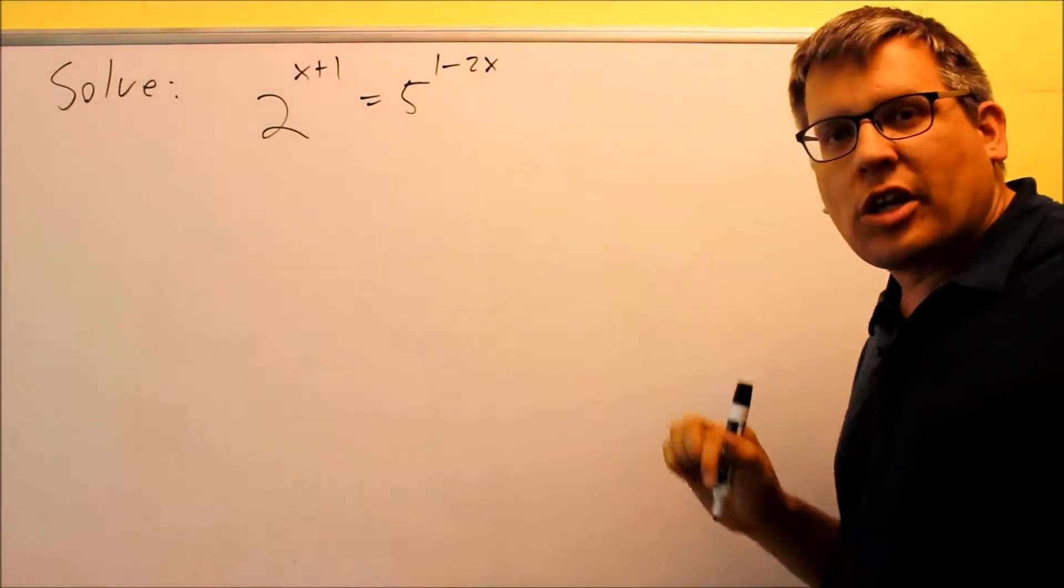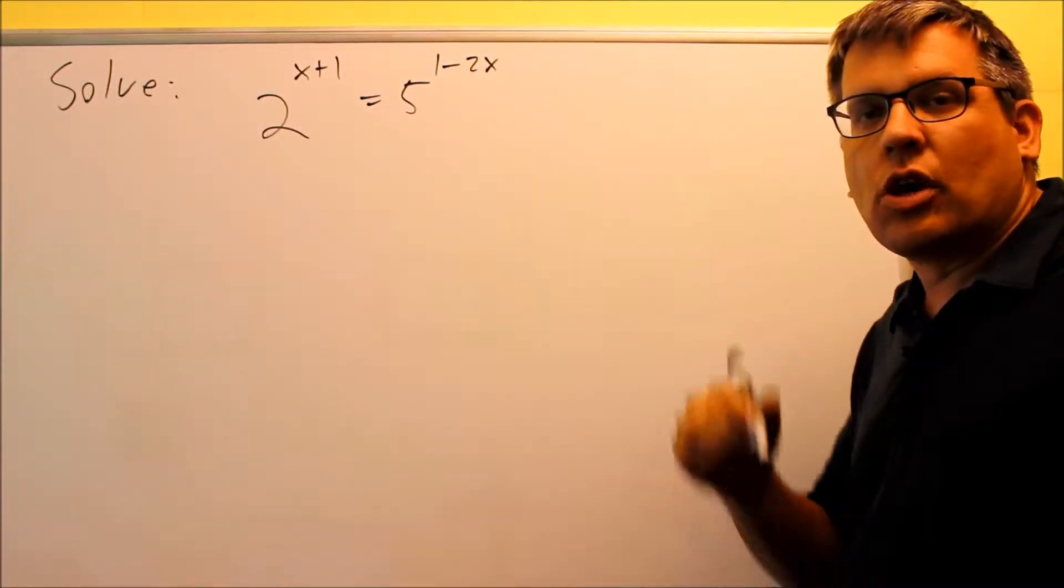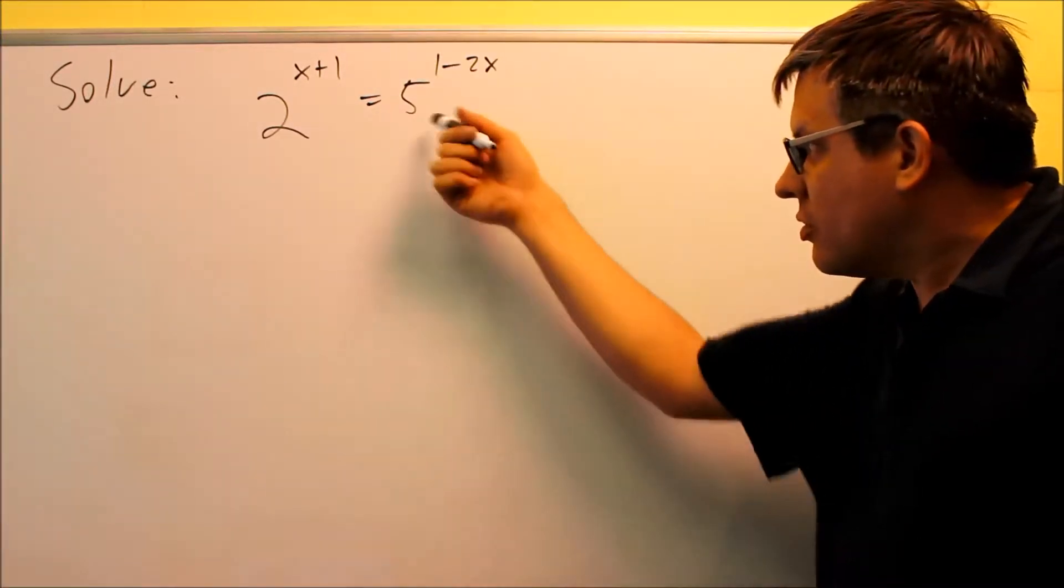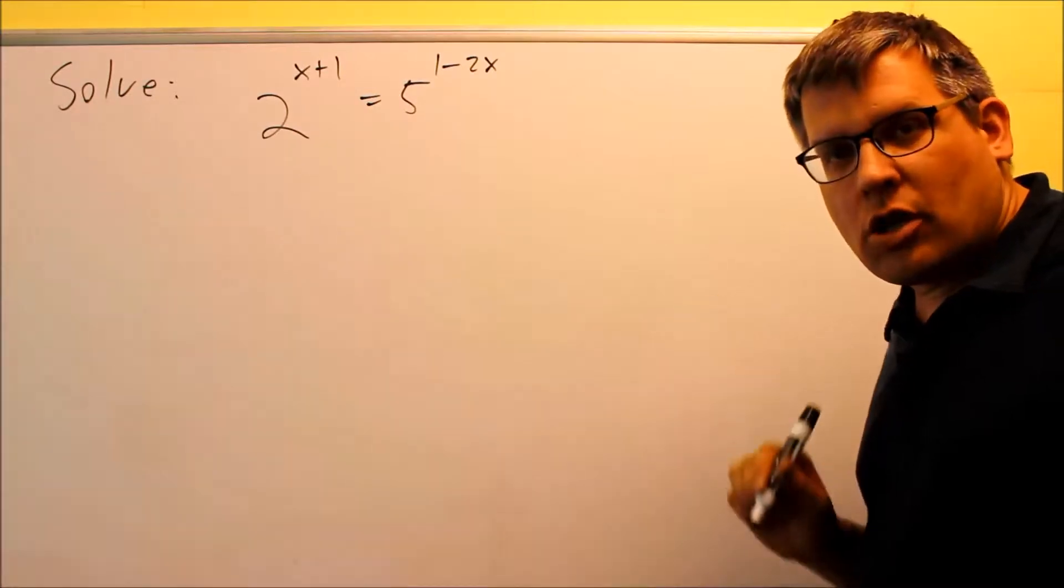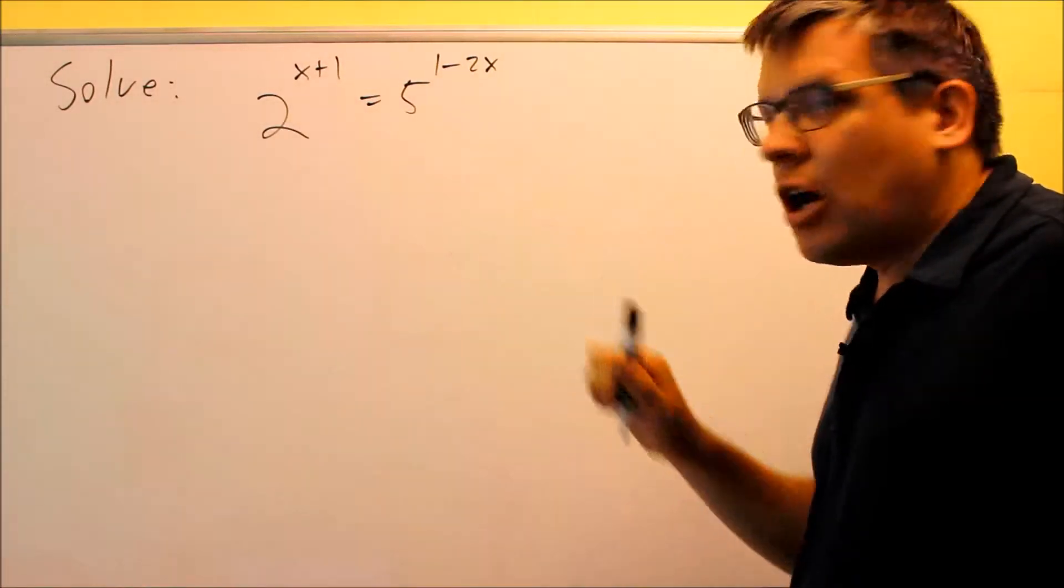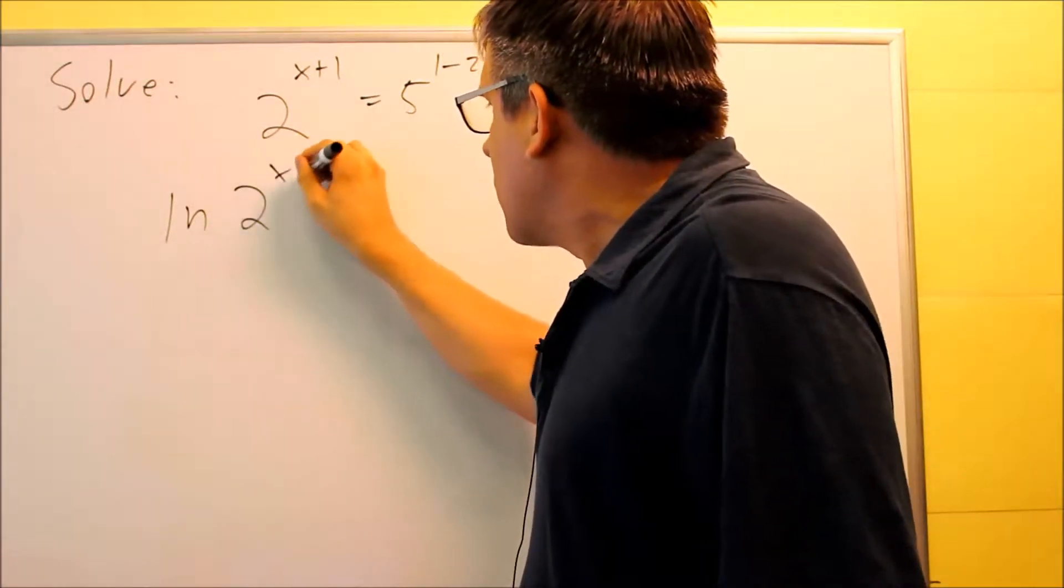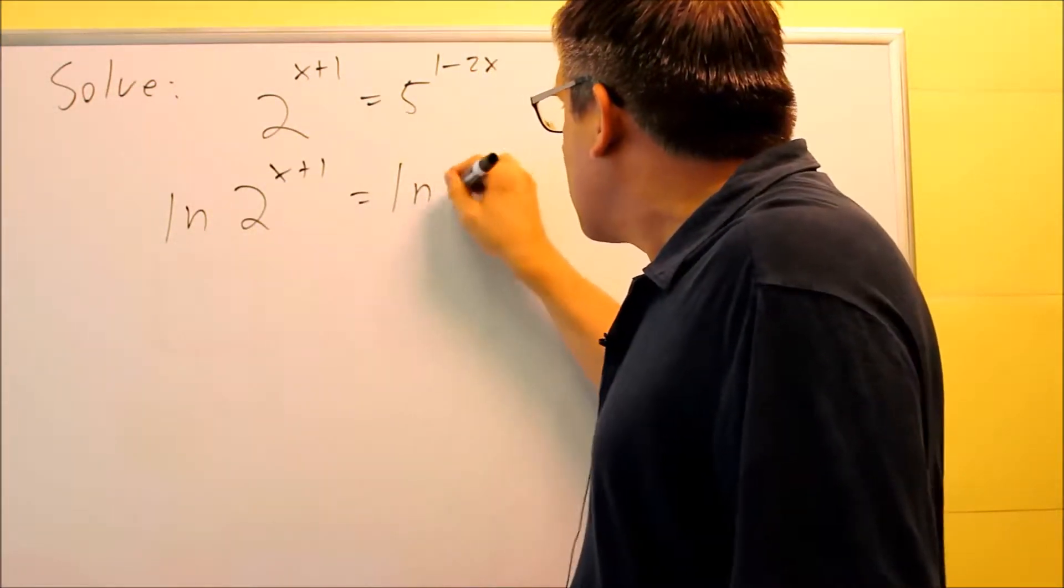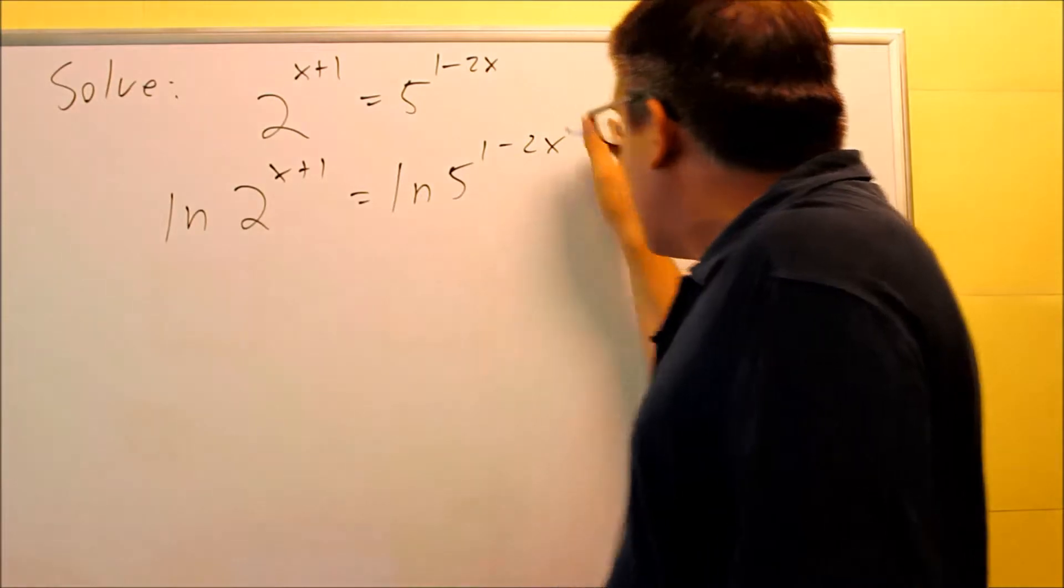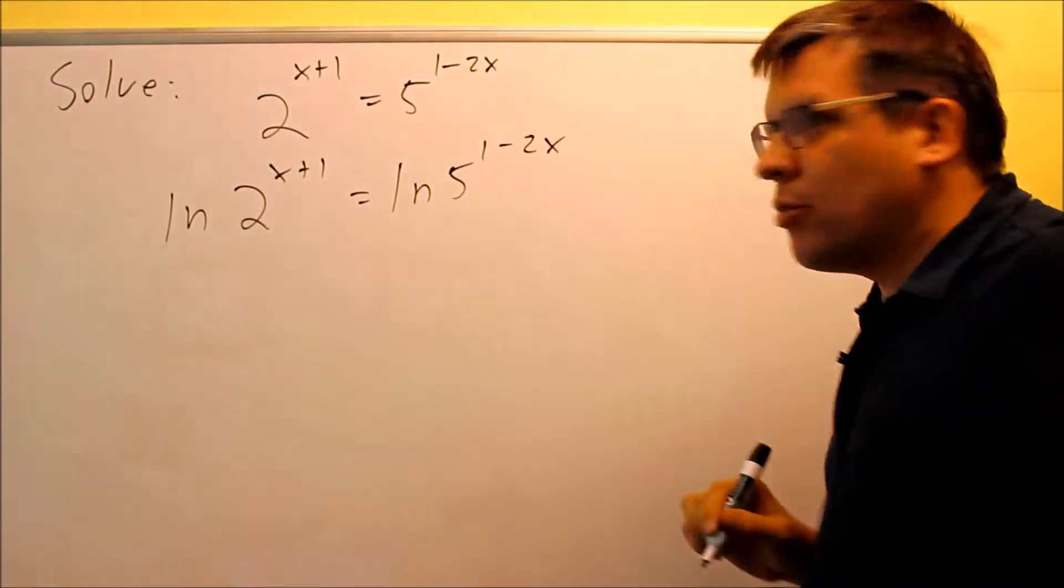We're going to use the same technique we just used in the previous example, where we're going to take either the log of both sides or ln. So I'm going to choose to use the natural log, and I'll put a natural log on both sides. So we'll do natural log of 2^(x+1) equals natural log of 5^(1-2x).